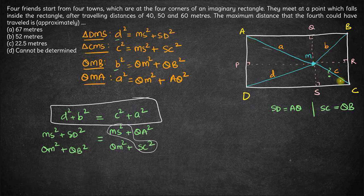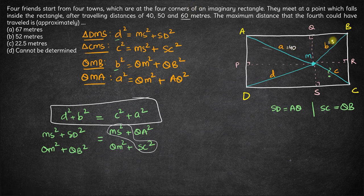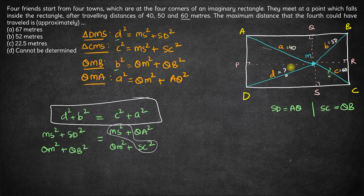So the sum of squares of distances from A and C equals the sum of squares of distances from B and D. Given that three people travelled distances of 40, 50, and 60, there are two cases depending on which distances are opposite to each other: either 40 and 60 are opposite (and 50 and x are opposite), or 40 and 50 are opposite (and 60 and x are opposite).